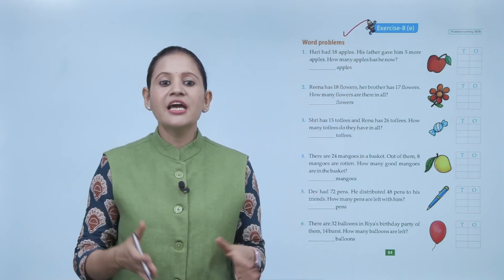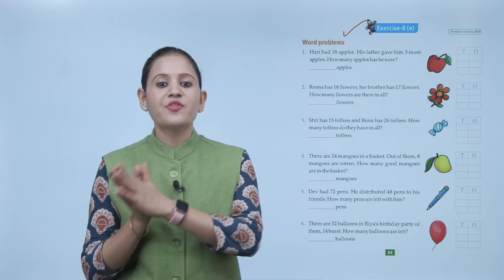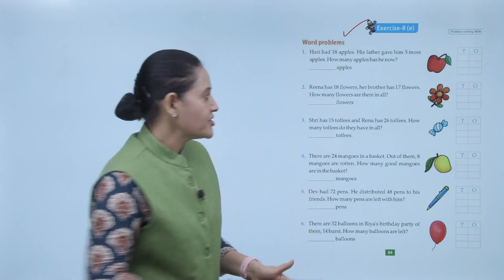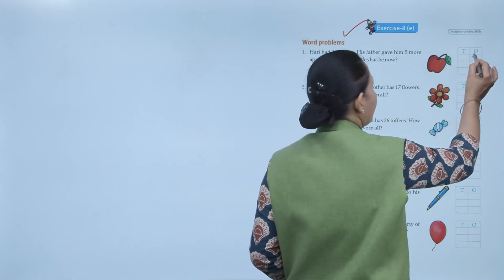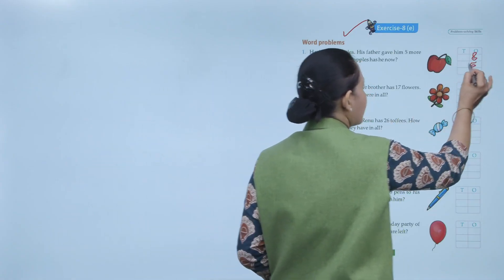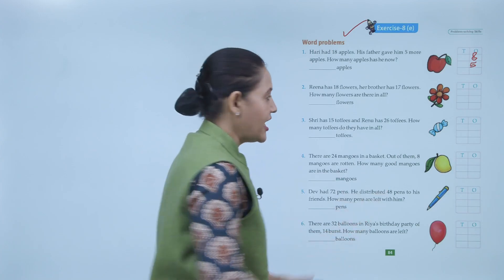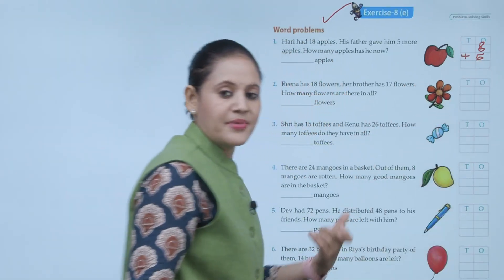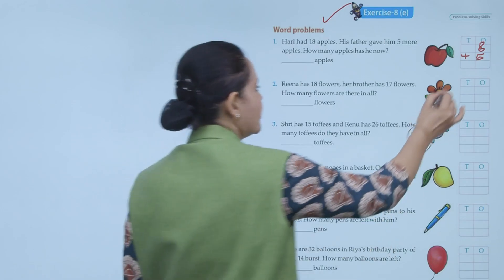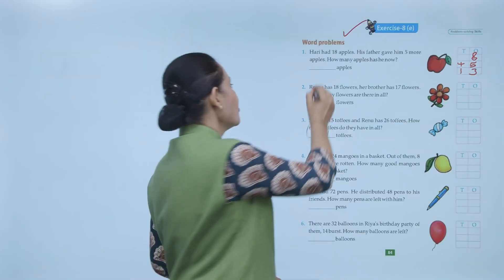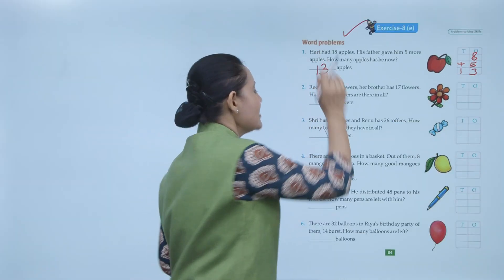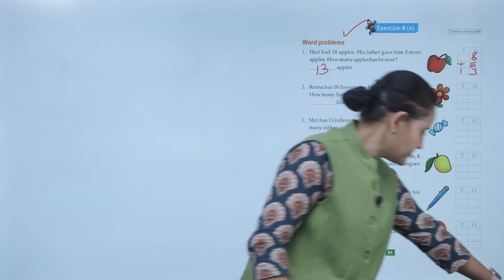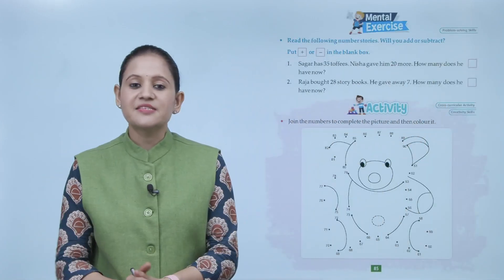Word problem: Hari had 18 apples. His father gave him 5 more apples. How many apples does he have now? He had 18 apples and father gave 5 more. So we will add: 8 plus 5 equals 13 — write 3 under the ones column and carry 1. So total is 23 apples. You have to practice all the questions.